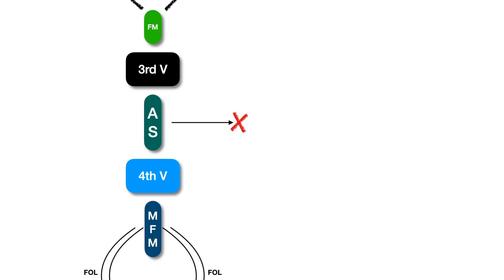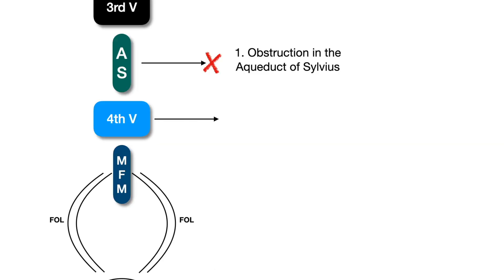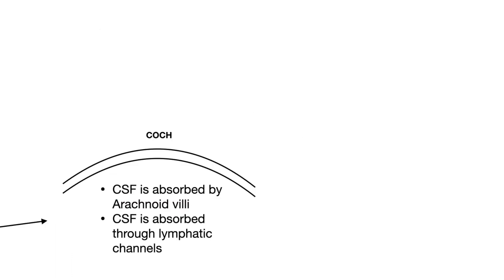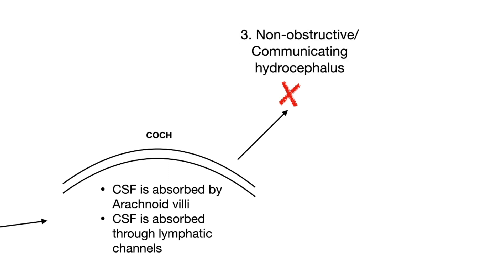Now, the pathology of hydrocephalus: First, due to any obstruction in the aqueduct of Silvius. Second, due to any lesion in the fourth ventricle. Third, if any abnormality occurs in the convexities of the cerebral hemisphere, then CSF absorption can get hampered — and this is called non-obstructive communicating hydrocephalus.